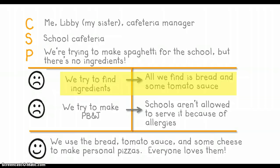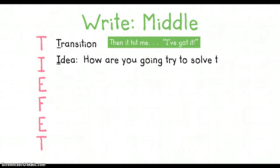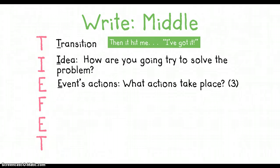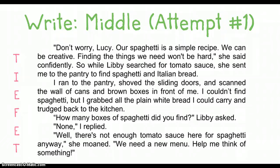My second paragraph is going to be about the first attempt to solve the problem and how it fails. To write my first attempt, I'm going to use a strategy called TIE-FET to organize it. When I use TIE-FET, I want to start with a transition, then it hit me or I've got it. Next, I want to state what my idea is. So I want to think about how am I going to solve the problem. After I get my idea, I have to have some actions. So what actions take place? I want about three actions. After I do all these actions, I need to show the failure. Why doesn't this work? Then I need to show my emotion. How do I feel when this fails? And finally, I need to wrap things up with another transition, something like I had to think of something else.